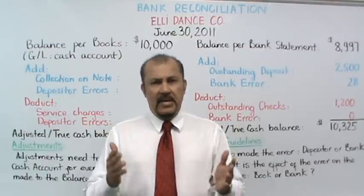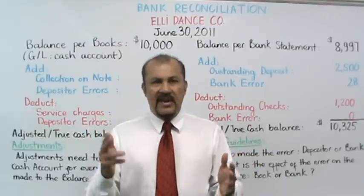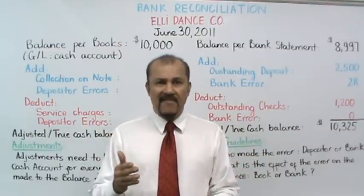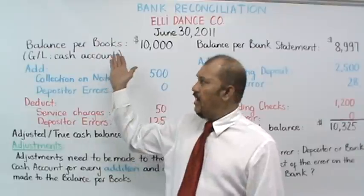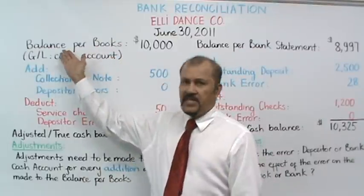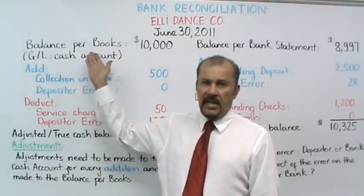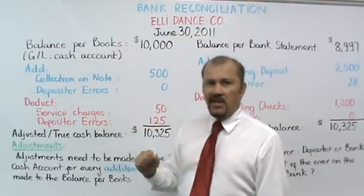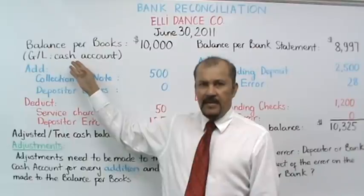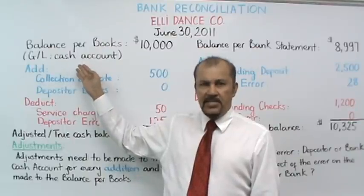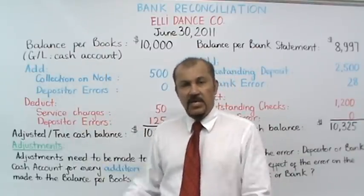Second, when you're at the end of the month, you tend to have two different balances. In this case, let's look at Ellie Dan's company as of June 30th. Ellie Dan's company's books shows a balance of $10,000. For you accounting majors, I've also noted that this is the same balance that's reflected in the general ledger cash account.